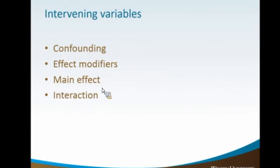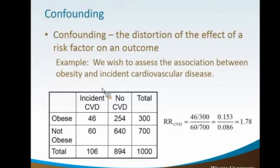The next thing to talk about are intervening variables. These aren't overly complicated things, but things you need to know about. Something like a confounder can literally confound and cause issues in your analysis. You may have effect modifiers, and you may have main effects and interactions, which can actually be kind of cool.